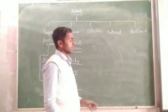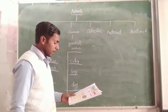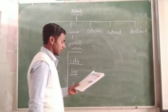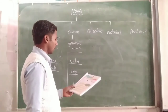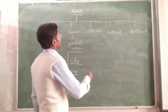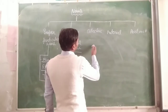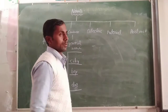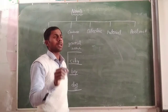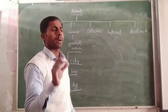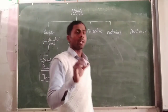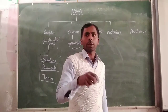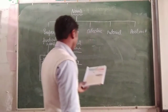Third is collective noun. The name used for the collection of people, animal, place, etc. is known as the collective noun. Collective noun is a group name. If there are many persons and we use a word for that group, it will be a collective noun.